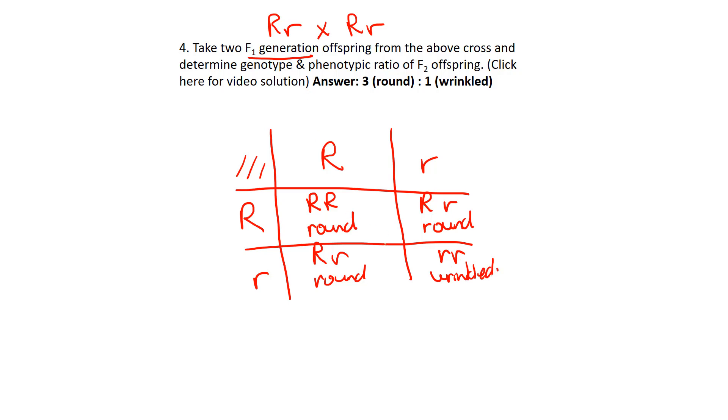Okay. And our ratio, count the boxes up out of four boxes. Three of them are going to be round. One of them is going to be wrinkled.